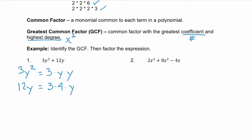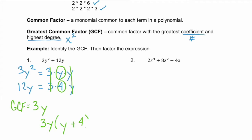Now, what do these two terms have in common? Well, they share a 3 and they both have a y. So 3 times y, or 3y, is our GCF. If we factor out our GCF, the first term leaves behind a y, and the second term leaves behind a positive 4. So our factored form is 3y(y + 4).